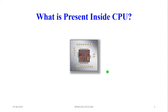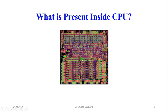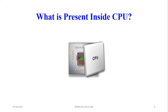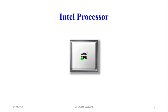Everything in the CPU is fabricated in a single semiconducting material. This integrated circuit contains a number of transistors manufactured inside a single chip. This integrated circuit is encapsulated inside a metal casing — and that is the Central Processing Unit.